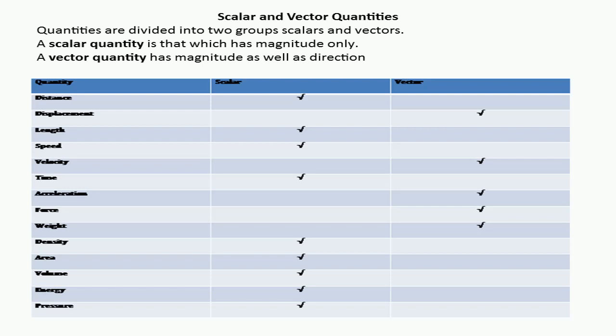In the table below, we have given some physical quantities and differentiated them as scalar or vector. The table has three columns: the name of the quantity used in O-level Physics, whether it is scalar, and whether it is vector. The first quantity is distance. Distance is a scalar quantity, so for its representation we do not need direction.